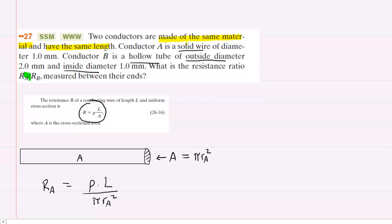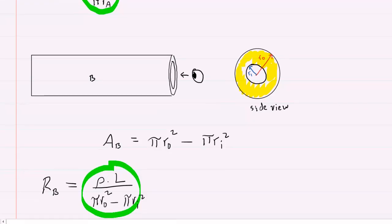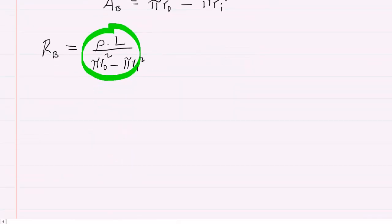Now, the question wants the ratio R_A divided by R_B. So we're going to take this value for R_A that we derived and put that over this value for R_B that we derived. So it will look like the following. We'll have R_A over R_B. And again, R_A was rho times length divided by pi times the radius of wire A squared. And then you're going to divide that by this quantity right here. So rho L over pi outer radius squared minus pi inner radius squared.